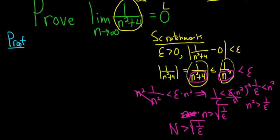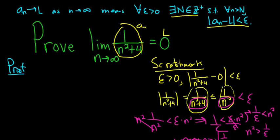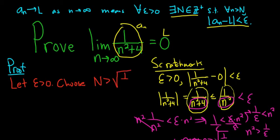The Archimedean property says that given any real number, you can find a positive integer that is greater than that number. So the square root of 1 over epsilon is a real number, and we can find an n that's bigger. Let's go ahead and do our proof carefully. We'll start the proof by letting epsilon be greater than 0. Then, via the Archimedean property, we can choose a capital N that's bigger than the square root of 1 over epsilon.